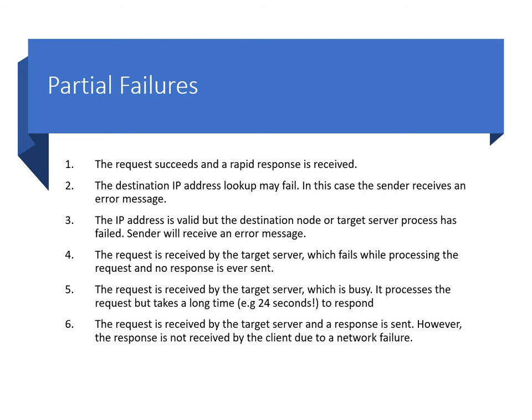When the client sends a request and expects a response from the server, the following outcomes can all occur. First, the request succeeds and a rapid response is received — this is great. Second, the destination IP address lookup may fail; in this case the client rapidly receives an error message — rapid error messages are good, at least you know the situation. Third, the IP address is valid but the destination node or target server process has failed, so the client will receive an error message and the protocol will recognize that the service is not available or the node has crashed and respond accordingly.